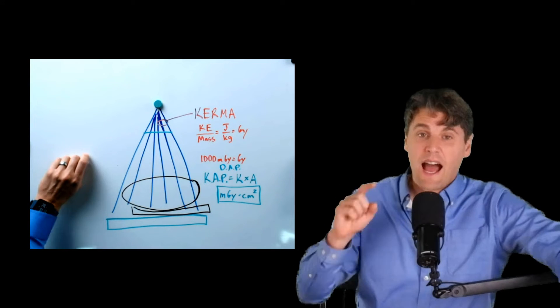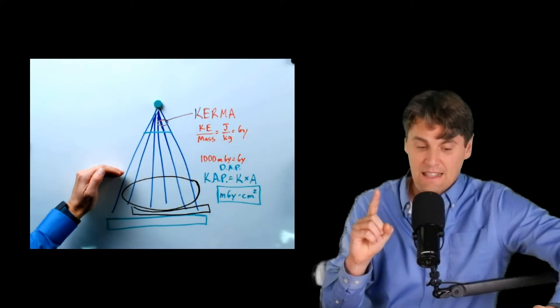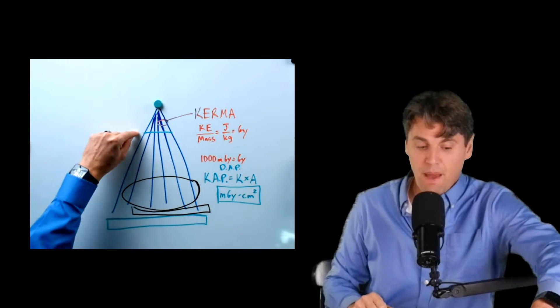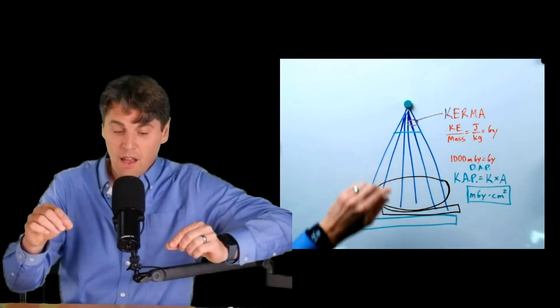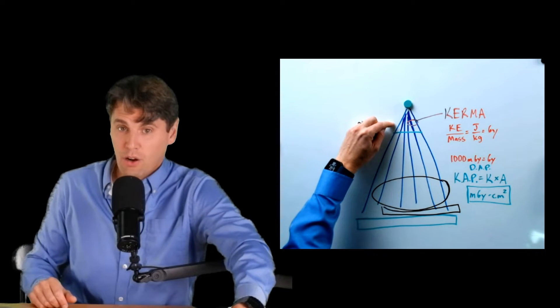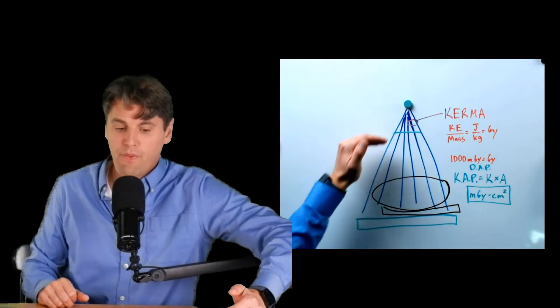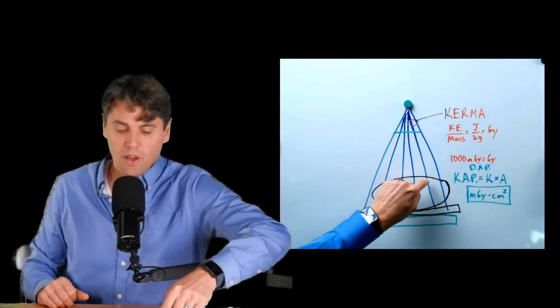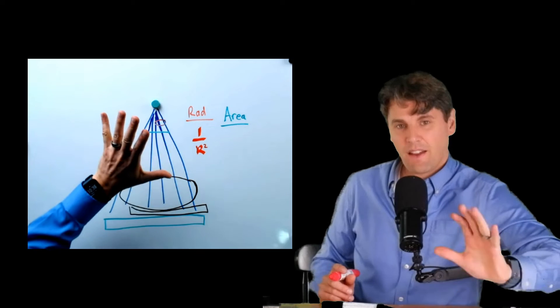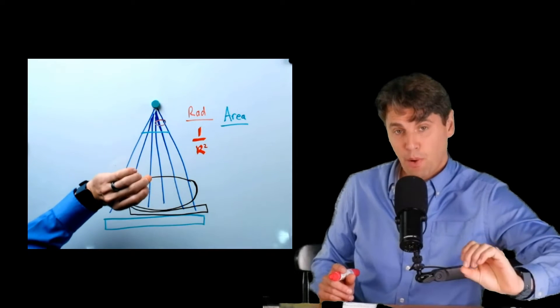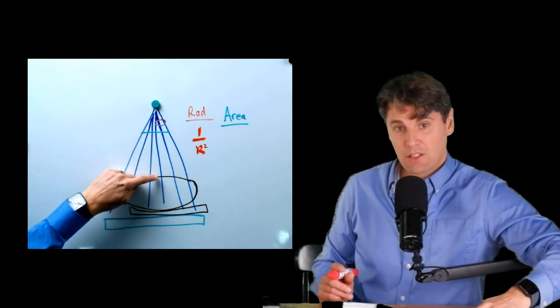Then an important question is how does the Kerma area product change as a function of the distance from the x-ray tube? We're often going to be measuring the Kerma area product very close to the x-ray tube. We have the distance measurement there, and then we also have our Kerma measurement there with an ion chamber, for instance. And then how does that actually change as you move further away from the x-ray tube? Because we're actually concerned about the irradiation of our patient, which is way down here. If you remember from our exposure factors video, the exposure actually goes like 1 over R squared, where R is the distance from the x-ray tube.